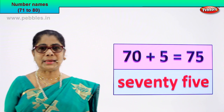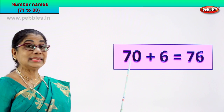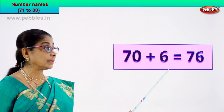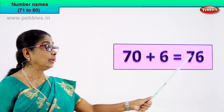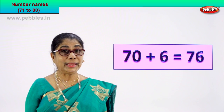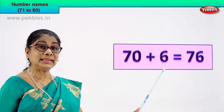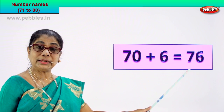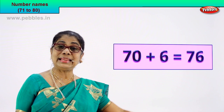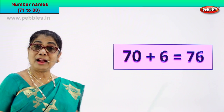70 plus 6 is equal to 76. How do we get 76? 70 plus 6 is equal to 76. 7 and 6 — 76. That's the numeral.